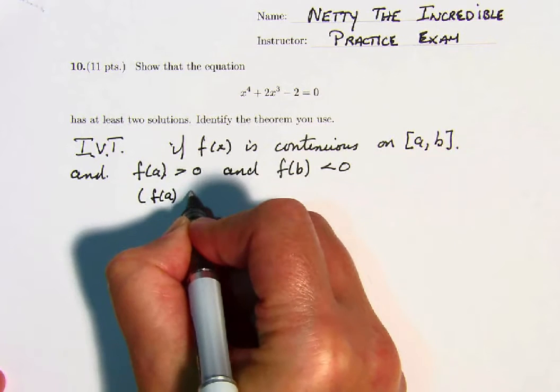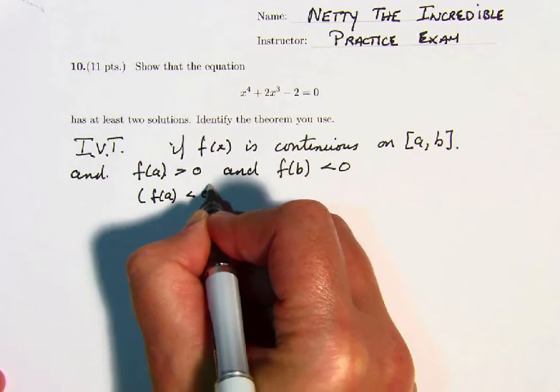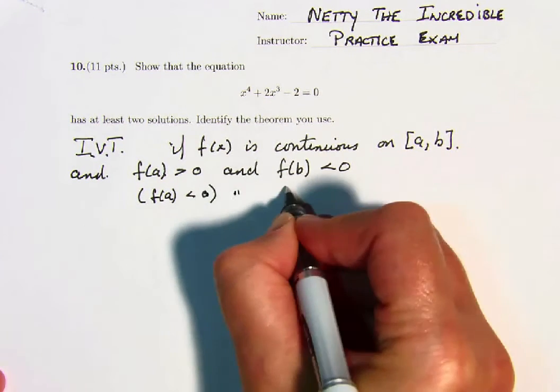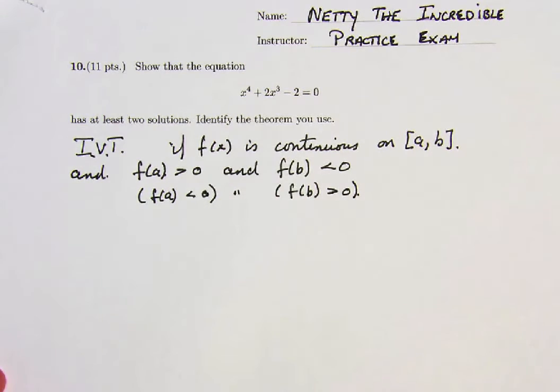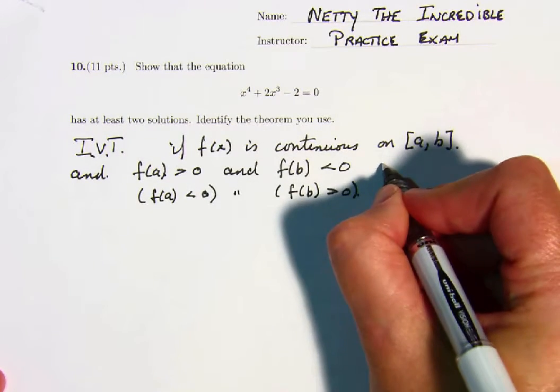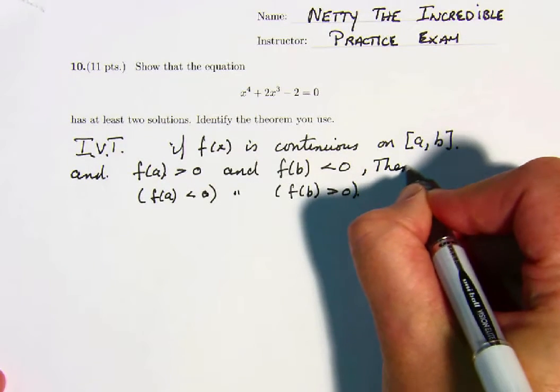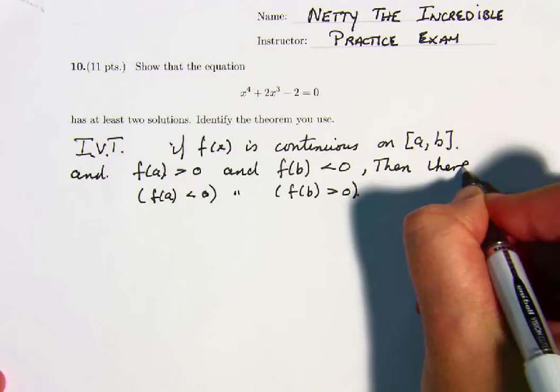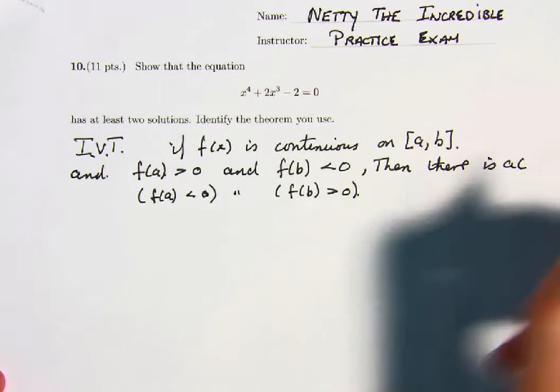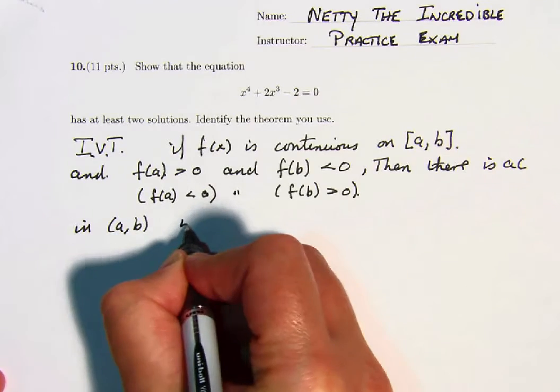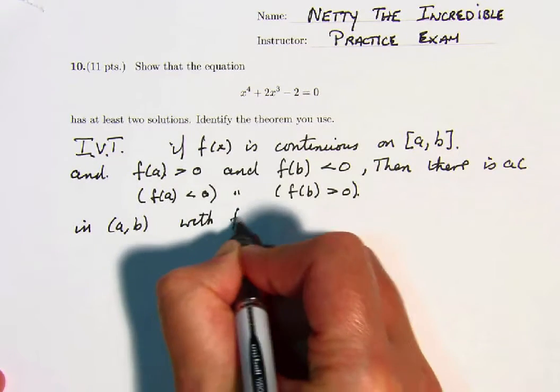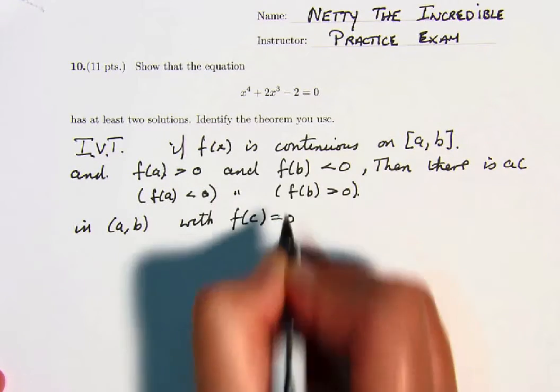or, alternatively, f of a is less than 0 and f of b is greater than 0. In other words, f changes sign on the interval, then there is some c in the open interval from a to b with f of c equal to 0.